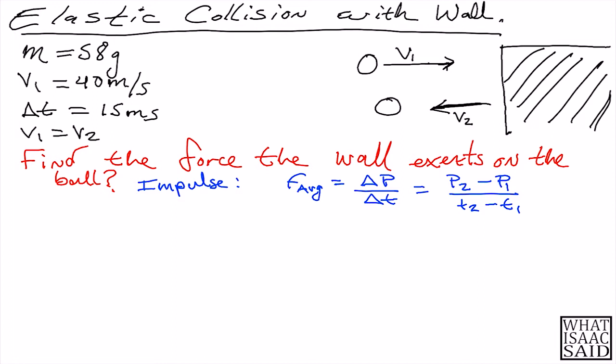First we're going to do the momentum 1, P1. Here we're looking at this path, the ball going in this direction, the rubber ball going in that direction. We know that P1 is going to be mass times velocity in that direction. We have to convert the 58 grams here to kilograms, and that is 0.058 kilograms.